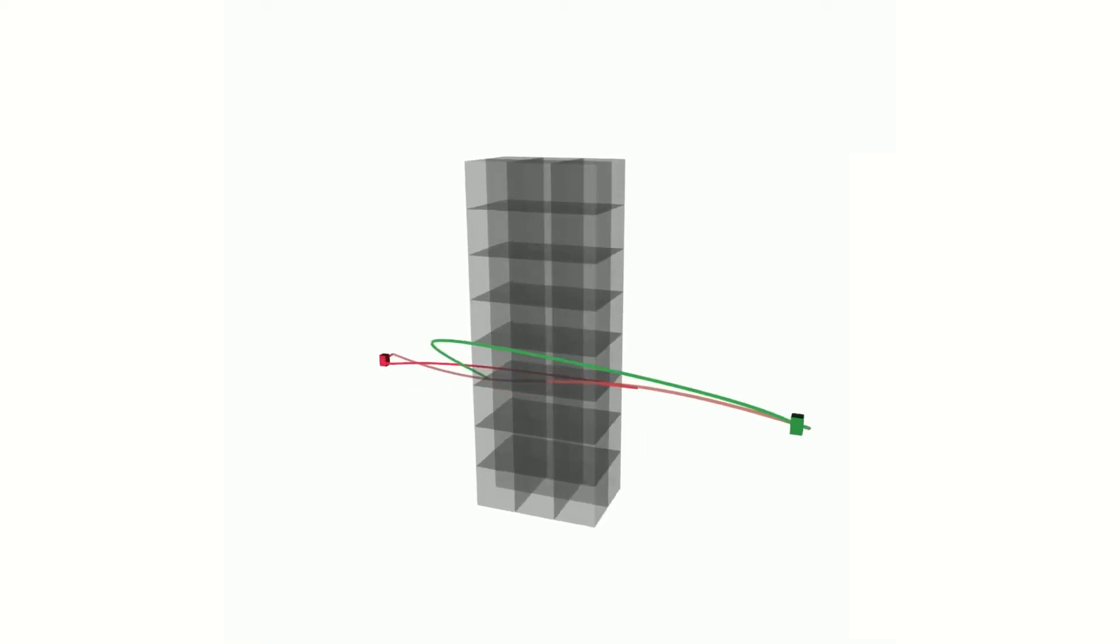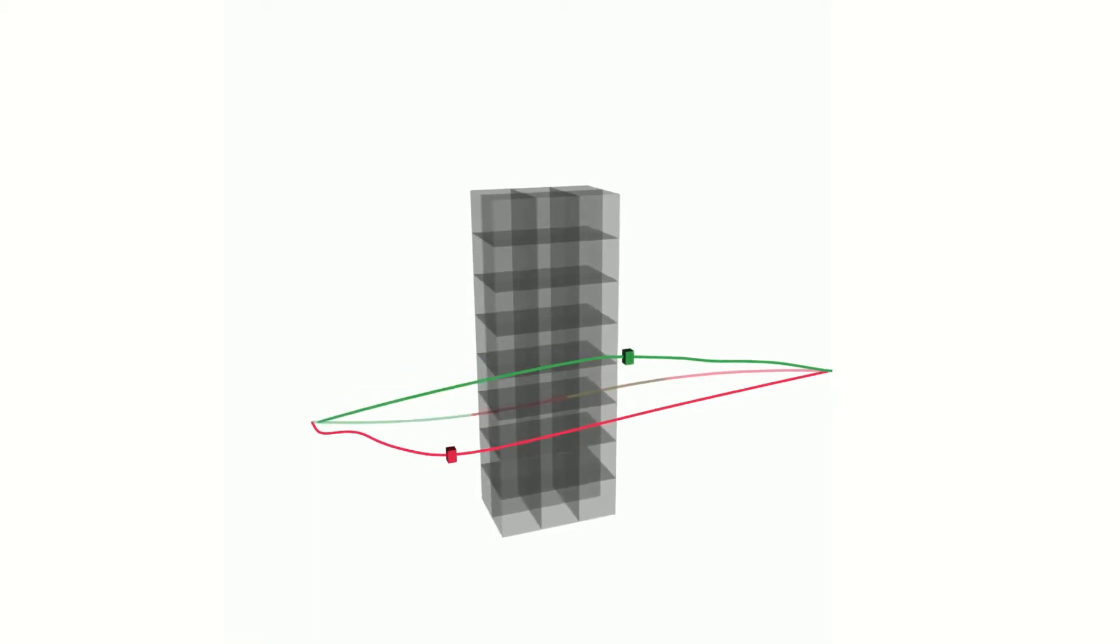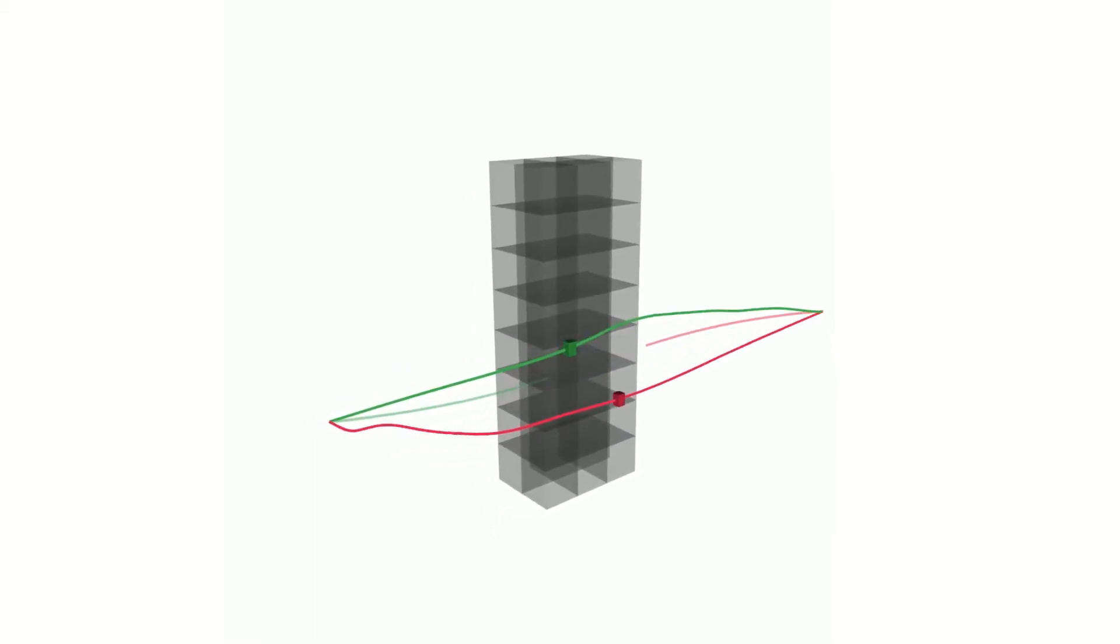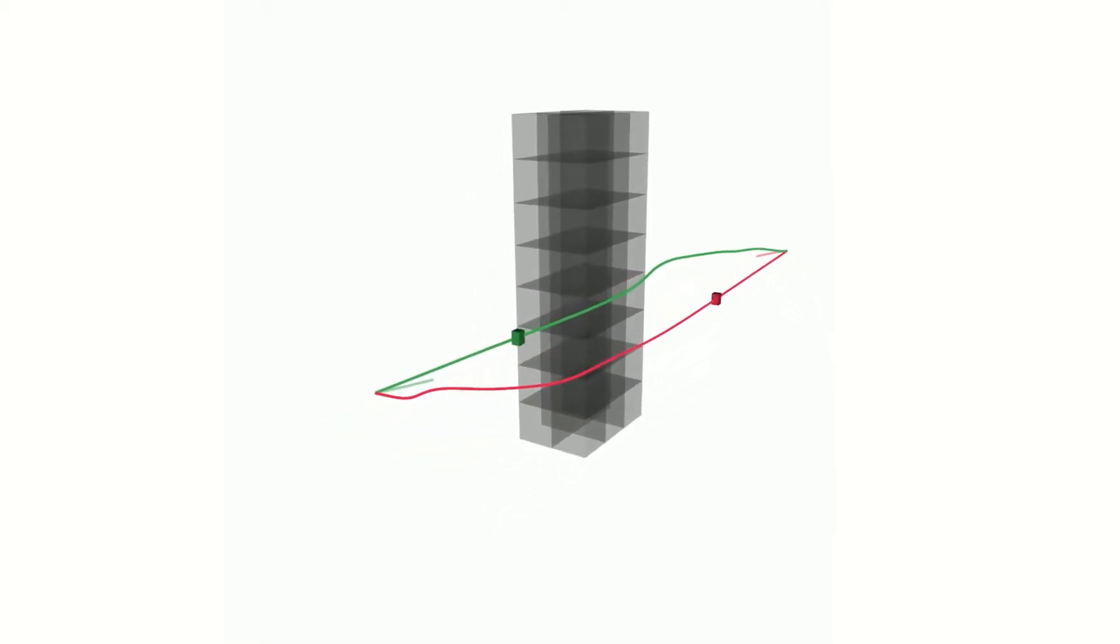RLSS uses desired trajectories as guidance and it allows robots to plan trajectories in real-time. Robots safely navigate around each other and the obstacle.